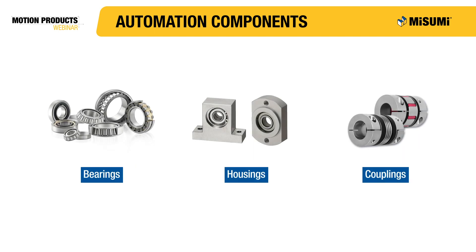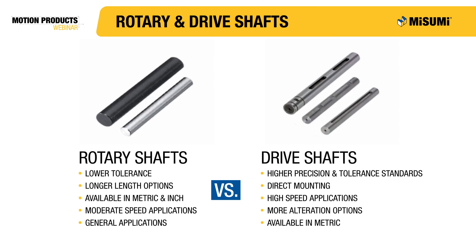Misumi also offers a wide range of supporting products such as bearings, housings, couplings, and many other rotary power transmission components to complement our rotary and drive shafts. Misumi rotary and drive shafts are offered in diameters ranging from 2 to 50 millimeters and lengths of up to 1,000 millimeters. Rotary and drive shafts share many similarities, but there are some key differences between the two.